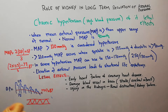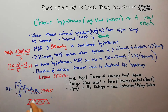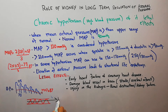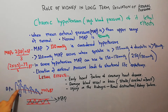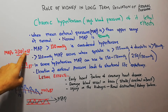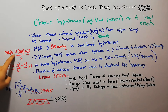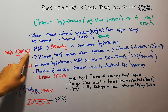Meanwhile, there is an average pressure through which blood moves forward in the vessels. This average pressure is known as mean arterial pressure. It is not simply the average of systolic and diastolic pressure; rather, it is calculated with the equation: MAP = (2 × diastolic pressure + systolic pressure) / 3.